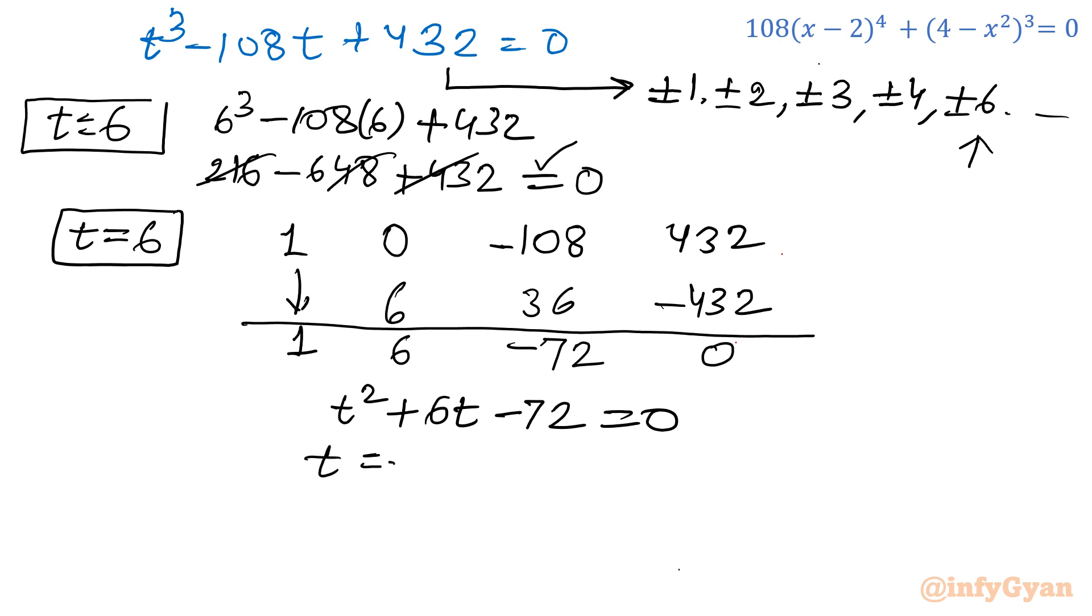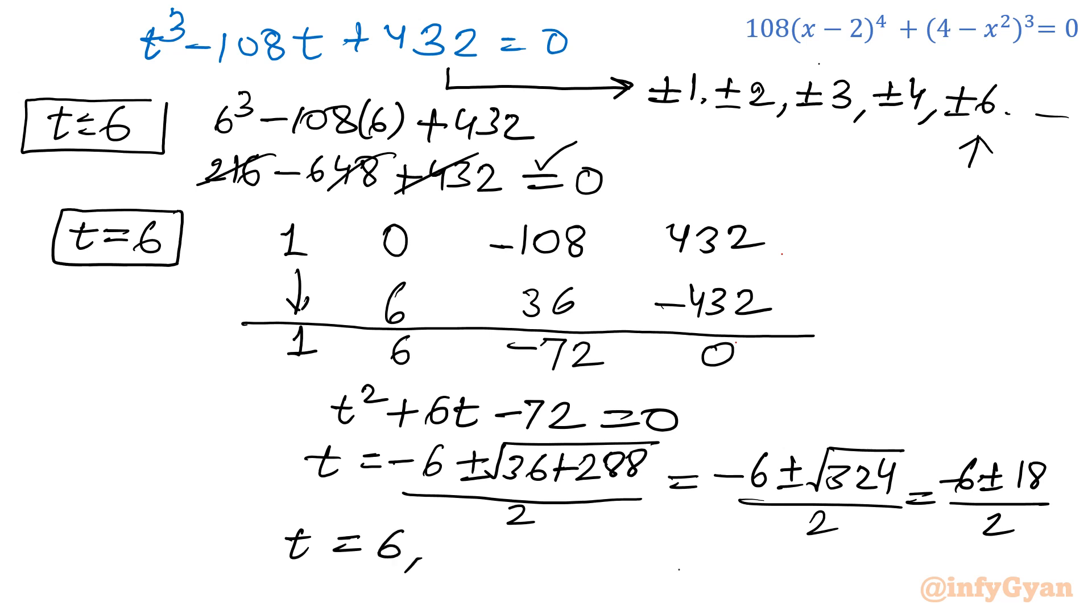Let us apply quadratic formula quickly. Minus b plus minus square root of b² minus 4ac over 2, which becomes -6 plus minus square root of 36 plus 288 over 2. This value will come out -6 plus minus square root of 324 over 2. Square root of 324 is 18, so -6 plus minus 18 over 2. Once I take plus sign, it will be 12 over 2, giving 6. Once I take minus sign, -24 over 2 gives -12.